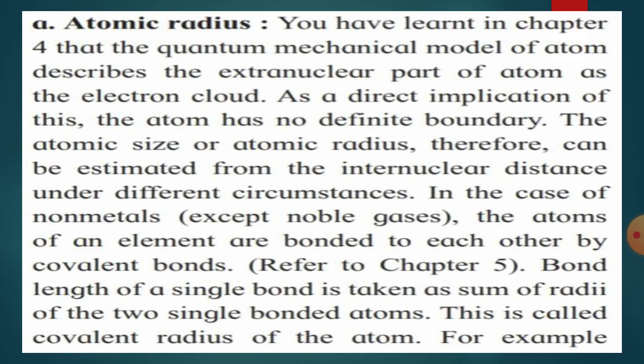We are familiar with the word radius. When we make a circle, the distance from the center to the outer layer of the circle is the radius. Similarly, in an atom the nucleus is present at the center. So the distance from the nucleus to the outermost shell is your atomic radius.